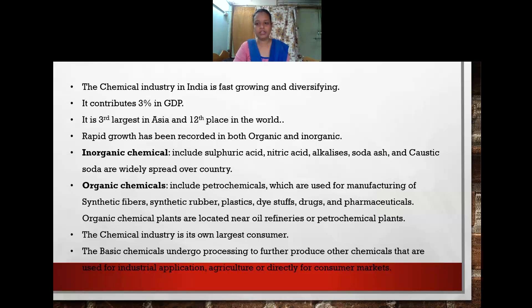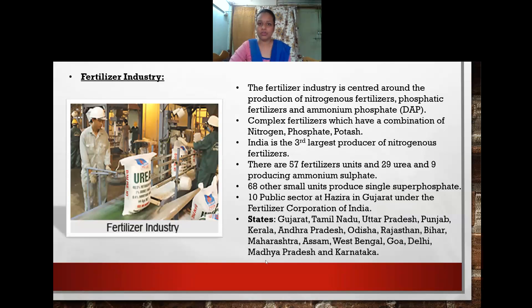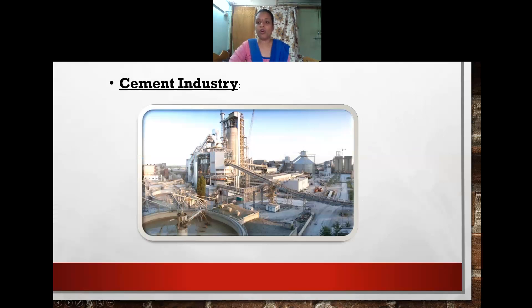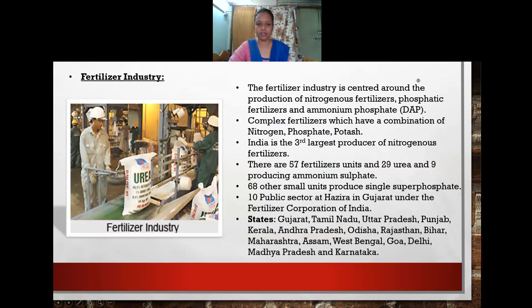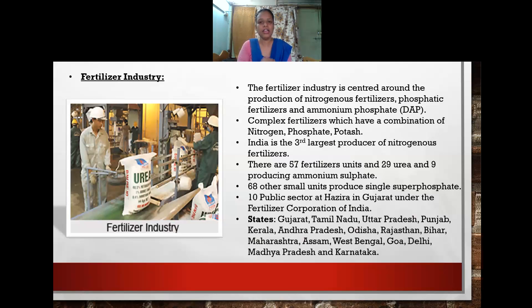Moving on to the fertilizer industry — fertilizers are centered around the production of nitrogenous fertilizers, phosphatic fertilizers, and ammonium phosphate (DAP). Complex fertilizers have a combination of nitrogen, phosphate, and potash, providing high-grade nutrition for crops.